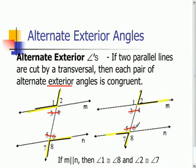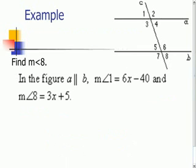And we also know if line M is parallel to line N, then the measure of the alternate exterior angles is congruent. So for example, angle 1 has to be congruent to angle 8, and angle 2 has to be congruent to angle 7.